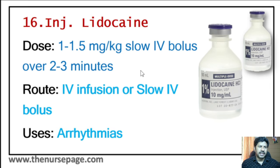Twenty-seventh injection is octreotide. Emergency use is control of bleeding from esophageal varices, which occurs in cirrhosis of the liver due to portal hypertension. This is an emergency condition — if untreated, the patient can die from hypovolemia. Octreotide is the drug of choice. Route is subcutaneous, IV injection, or IV infusion. Dosage is 50 to 100 microgram subcutaneously three times a day, or 50 to 100 microgram IV every 8 hours.